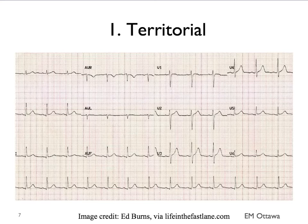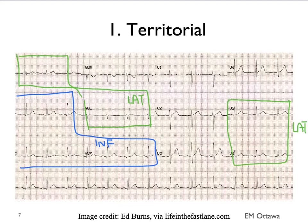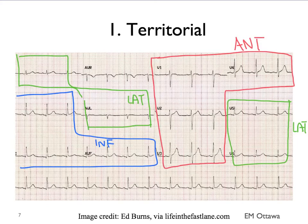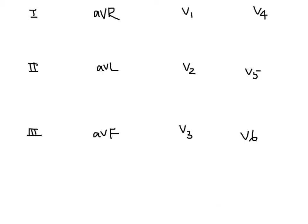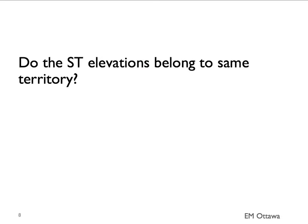On the 12-lead ECG, the inferior part of the heart is looked at by leads 2, 3, and AVF. The lateral part of the heart is looked at by leads 1, AVL, V5, and V6. V1, V2, V3, and V4 comprise the anterior part of the heart. In terms of coronary artery supply, the inferior part of the heart is mostly supplied by the right coronary artery, the anterior portion by the left anterior descending artery, and the lateral wall by branches of the LAD and the left circumflex artery. If we see ST elevations on the 12-lead ECG, we want to ask: do these elevations belong to the same territory of the heart? Let's see a few examples.